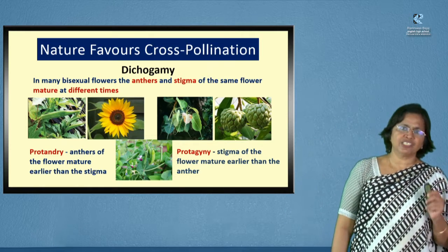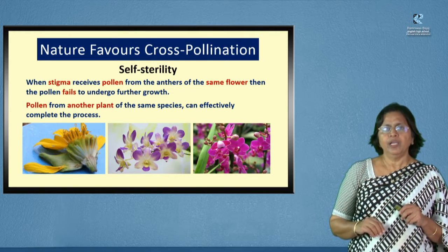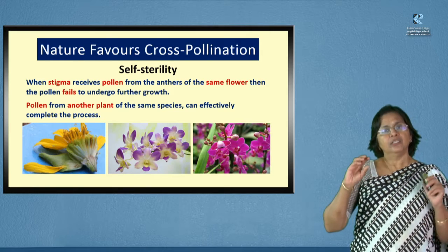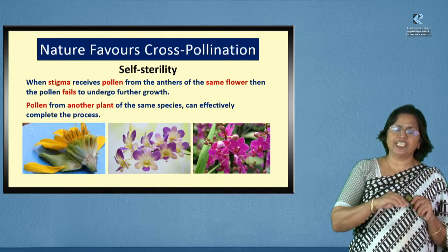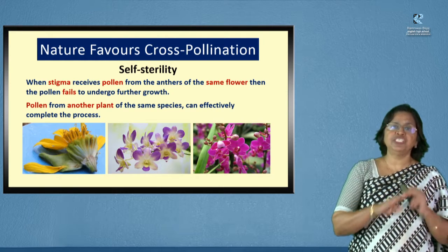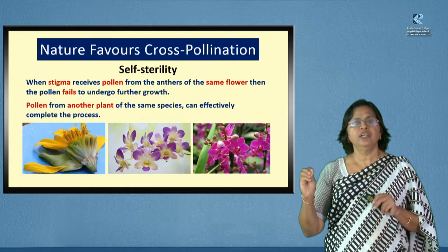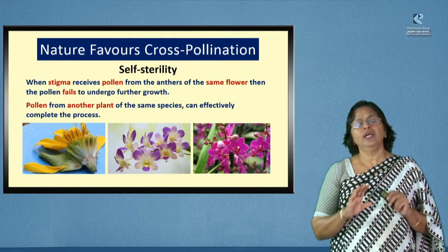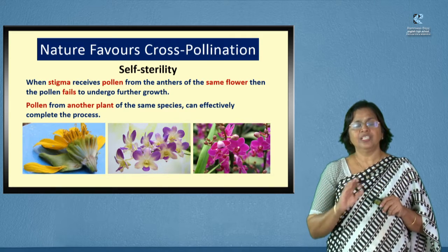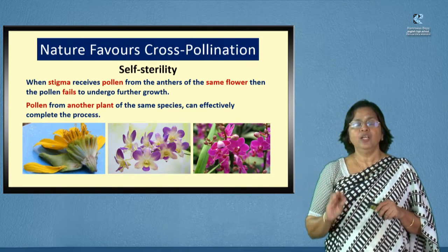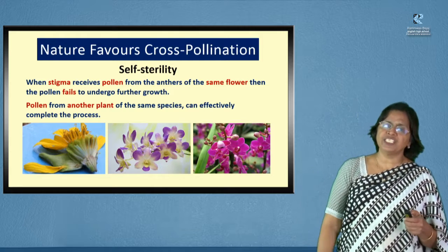Dichogamy is another condition that favors cross-pollination. Self-sterility: in some bisexual flowers, even if the anther and the stigma mature at the same time, if the pollen falls on its own stigma, the stigma will reject it. It will not allow the pollen tube to grow and will not let the male gamete reach the female gamete in the ovule for fertilization. So the stigma behaves as if it is sterile when its own pollen falls on it — that is called self-sterility, again favoring cross-pollination.